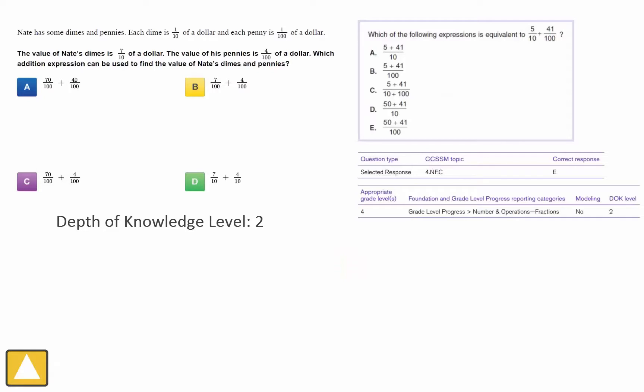We can see that this problem has the same depth of knowledge level as the sample ACT Aspire test item. Like the high-stakes test item, this question requires students to convert fractions in order to produce equivalent fractional entities before combining and writing an addition statement. This question also works with familiar values in base 10, just like the high-stakes test question.